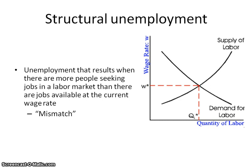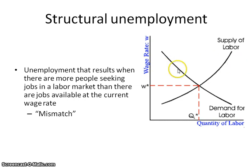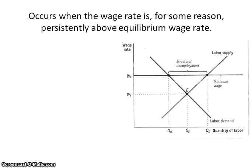Structural unemployment exists because sometimes people are looking for a job and they can't find one due to a mismatch. Unlike frictional unemployment, which is expected even at equilibrium, if you're at equilibrium there isn't structural unemployment because you'll find the right wage rate to match people. Structural unemployment usually exists because you have a wage rate that's higher than equilibrium, creating a mismatch between those looking for a job and those that can't find one.